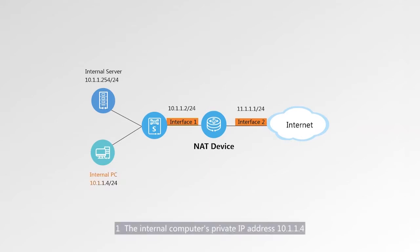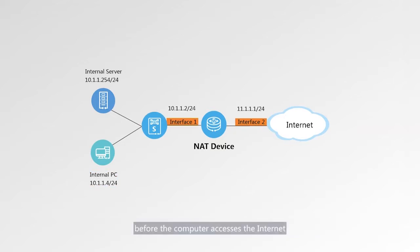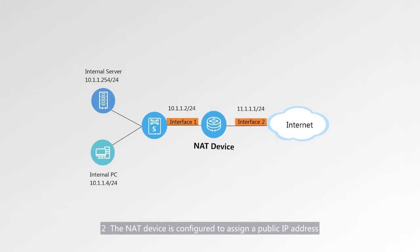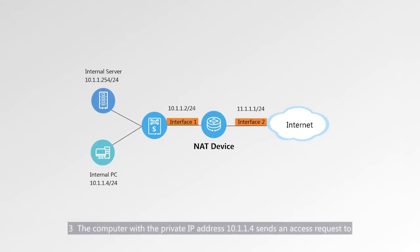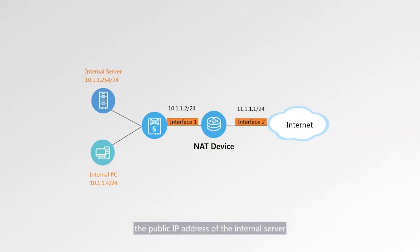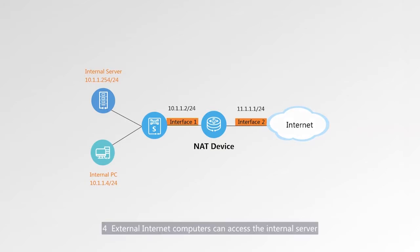The following requirements must be met. First, the internal computer's private IP address 10.1.1.4 is translated by NAT to an IP address in a public address pool before the computer accesses the internet. Second, the NAT device is configured to assign a public IP address to the internal server in easy IP mode. Third, the computer with private IP address 10.1.1.4 sends an access request to the public IP address of the internal server whose private IP address is 10.1.1.254. Fourth, external internet computers can access the internal server.